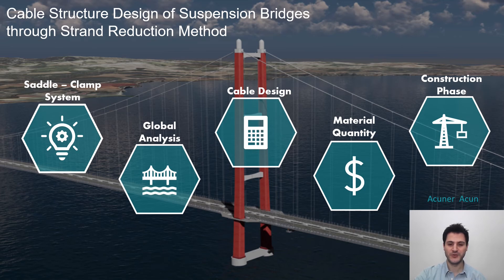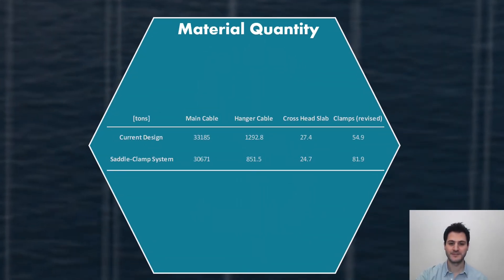Now I'd like to talk about material quantity reduction. Main cables, hangers, crosshead slabs and clamps are revised cable structures of the saddle clamp system. This system requires 7.6% less main cable material compared to current design of the bridge. As special hangers of the saddle clamp system are treated as main cable, reasonable amount of hanger cable material is optimized with this system. This ratio also corresponds to the ratio of revised hanger cables. Although unit mass of crosshead slabs is increased with saddle clamp system, as a result of using fewer crosshead slabs, almost 10 percent less cast steel material is used.